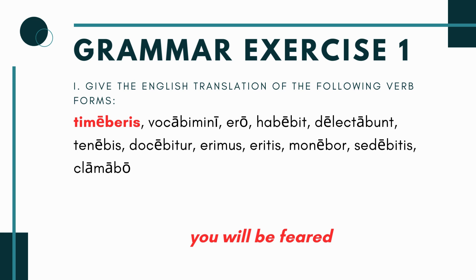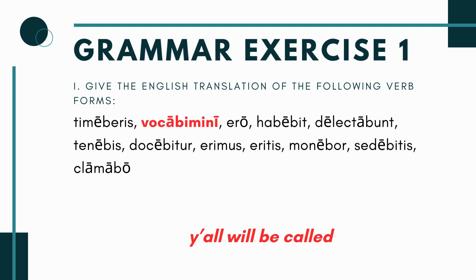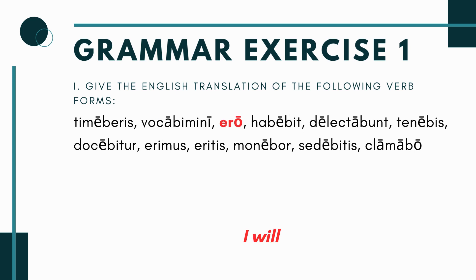The first one is 'timabaris.' This is future tense — you can tell by the 'be.' Remember, second person singular when doing a passive voice verb like this will be 'be' instead of 'bi,' but basically the bo-bi-bi-bu pattern is how you know it's future. The 'ris' ending gives it away as passive. This just means 'you will be feared.' The next one is 'vocabimini.' The 'bi' gives it away as future, and the 'mini' ending is second person plural. This is the verb vocare — to call — so this is translated as 'you all will be called.'